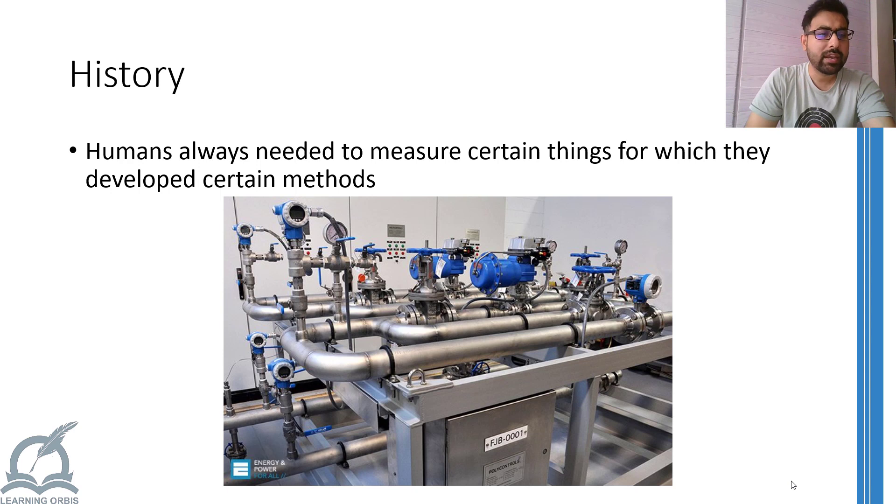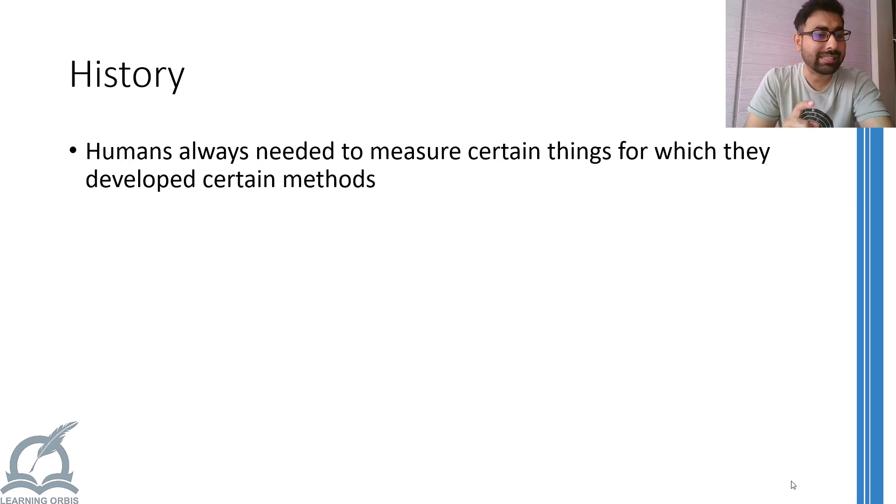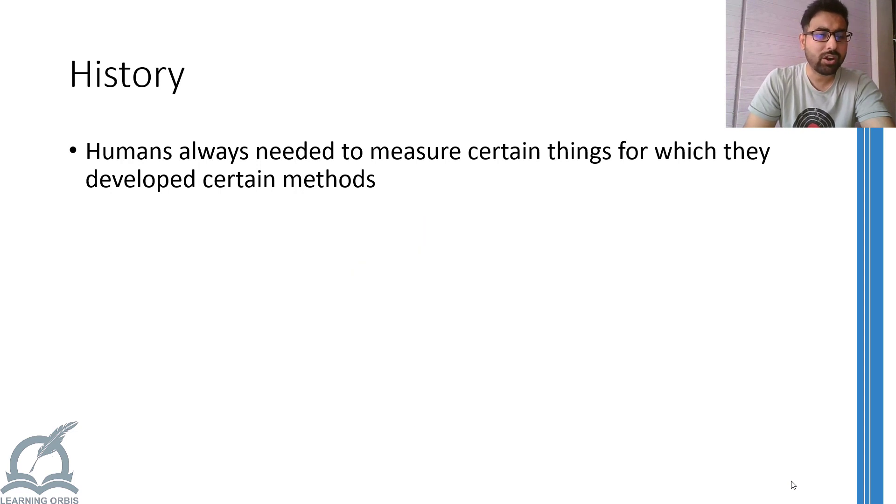The need for measuring something was always there, but it became more important as human societies kept on developing. The most basic form of measurement was and still used in trading. Whenever you want to exchange one commodity with the other, measurement must be there to establish a fair trade. Even today, we are using this form of measurement.